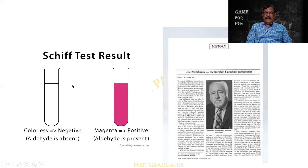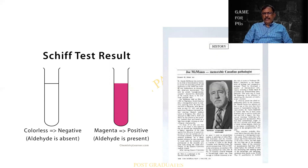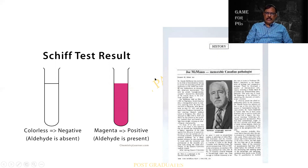Normally when there is a positivity, you find that a colourless substance is being converted into a magenta coloured substance wherein an aldehyde is present. This will be the basic principle I would like you to appreciate. And this gentleman — I could not get a photograph of his — is McManus, a Canadian pathologist who has contributed a lot in mucin histochemistry.